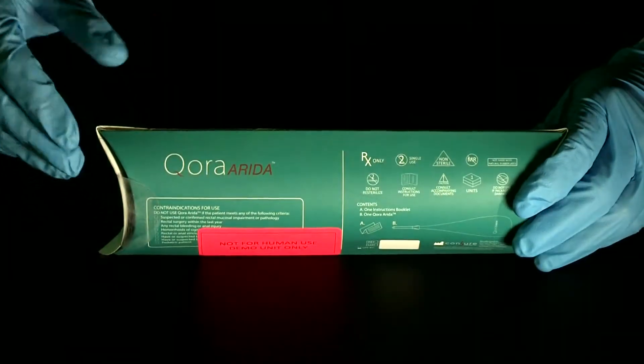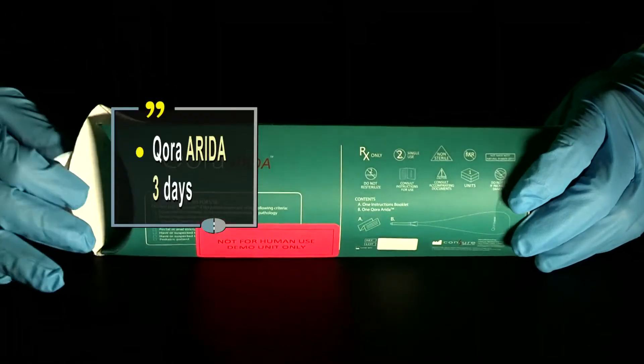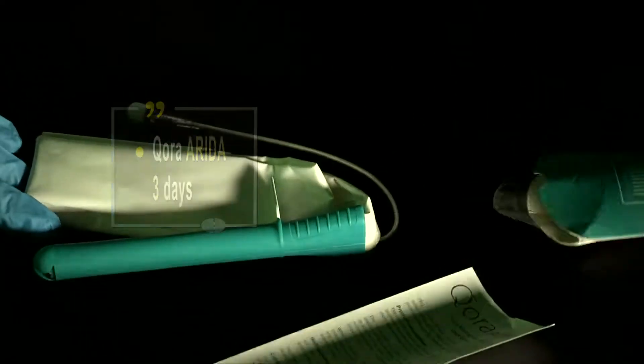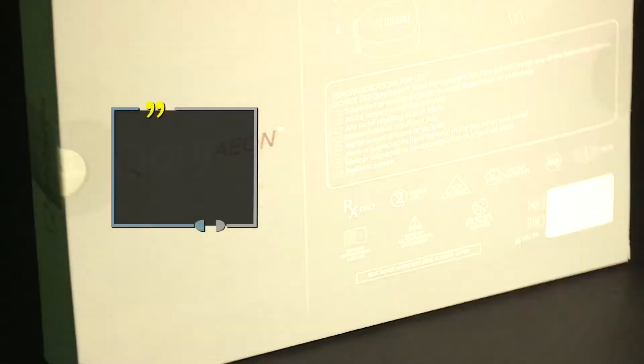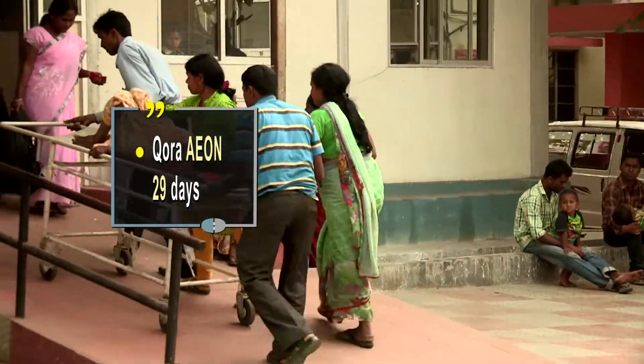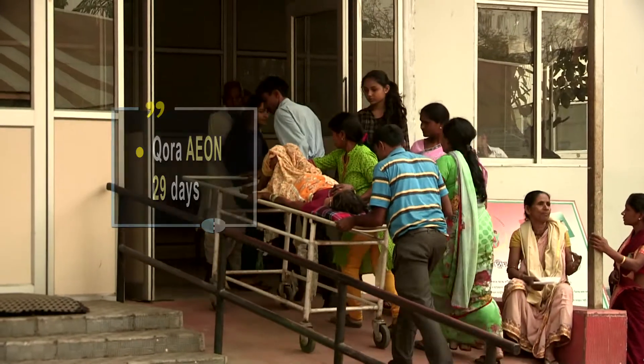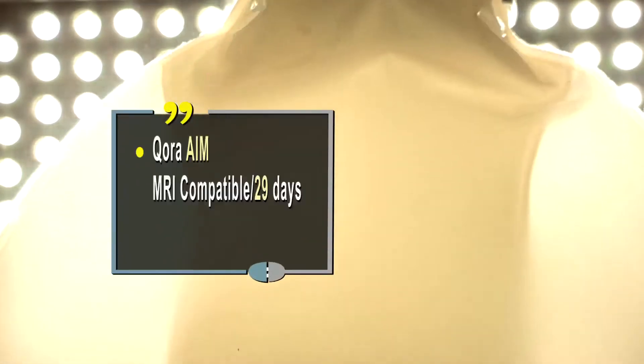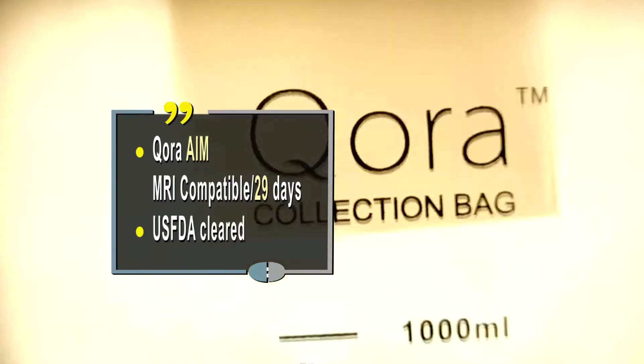Cora Areda closed system is for short-term fecal collection for acute use for up to three days. Cora Aeon is a long-term fecal management device for critical care and prolonged bedridden patients for use up to 29 days. Cora Aeon is an MRI compatible device for use up to 29 days.